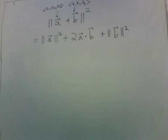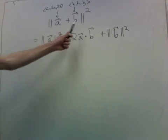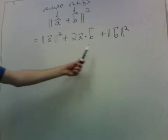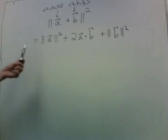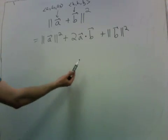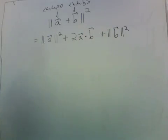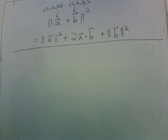So the dot product gives us this way of writing the length of a plus b, squared. We can write it just using vector notation — a length squared, plus a dot product, plus a length squared — without writing out any components. This notation is so nice that we can use it to solve a simple geometric problem.